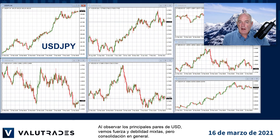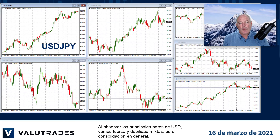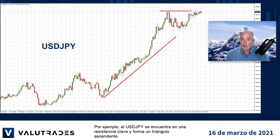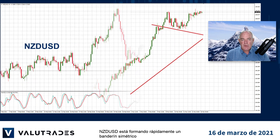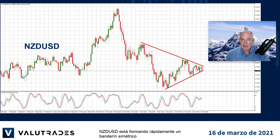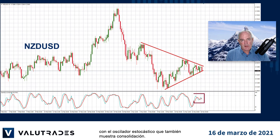Looking at major US dollar pairs, we see mixed strength and weakness, but consolidation overall. For example, Dollar Yen is at key resistance and forming an ascending triangle. Kiwi Dollar is rapidly forming a symmetrical pennant, with the stochastic oscillator also showing consolidation.